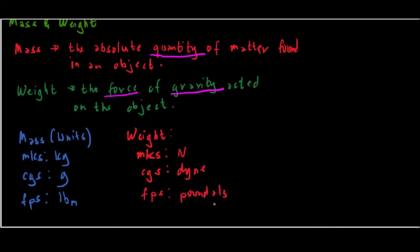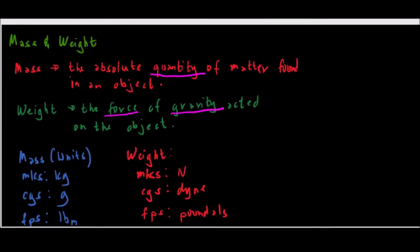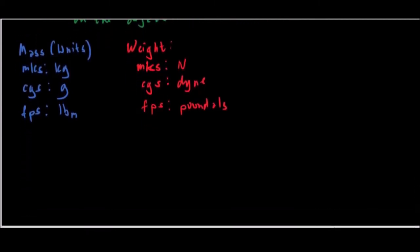This is the difference between the two: their definition and their unit. But if you are going to get the relationship, by definition weight is equal to the amount of gravity. That is the amount of gravity - we could say that our gravity is g acted on an object. The object can be described by its mass, so we have this formula: weight equals mass times g.